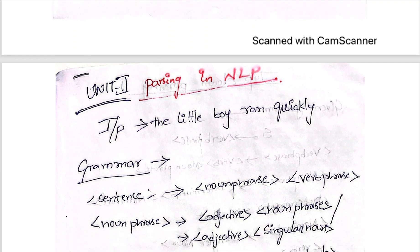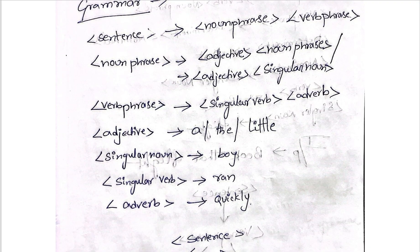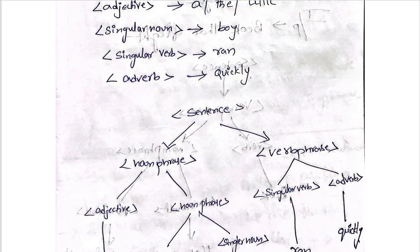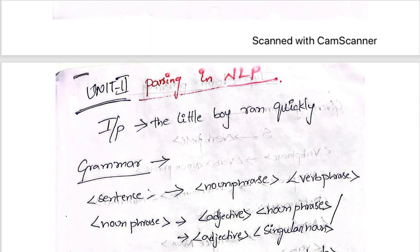In the next lecture, we will discuss simple examples — taking a given input sentence and writing a context-free grammar for it. Based on that context-free grammar, we can draw a parse tree. Thank you so much; I hope everyone understood what was covered today.